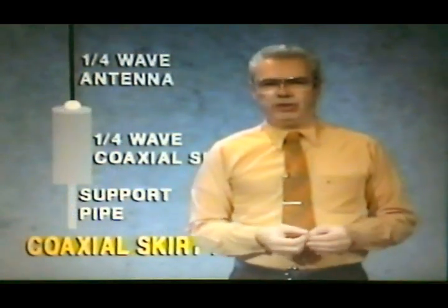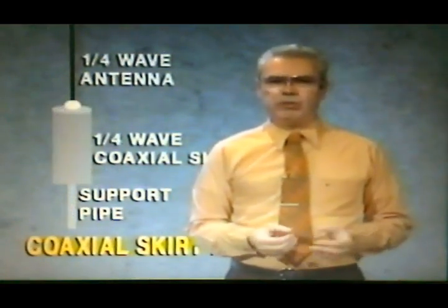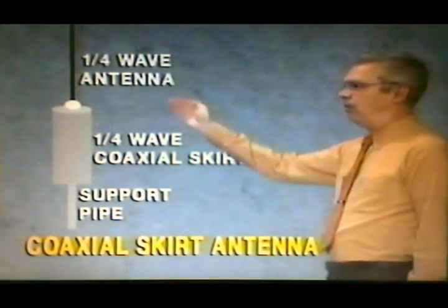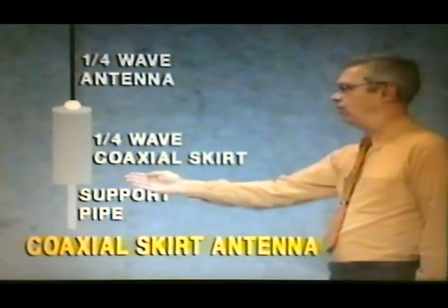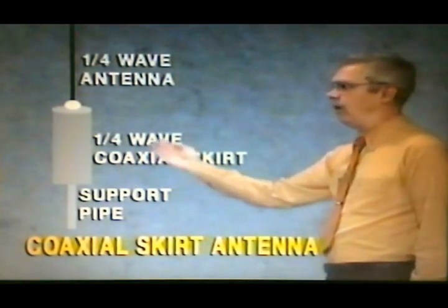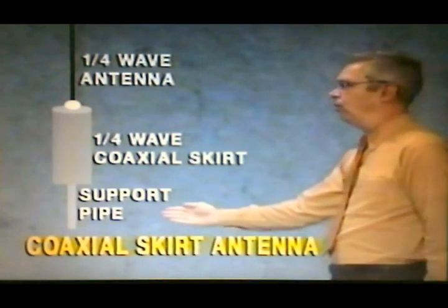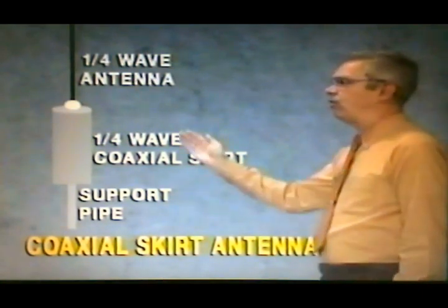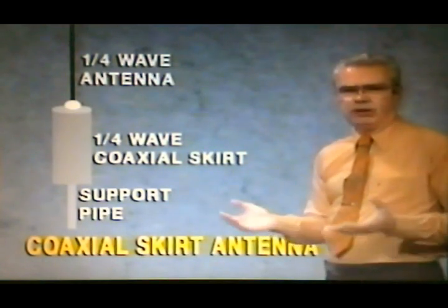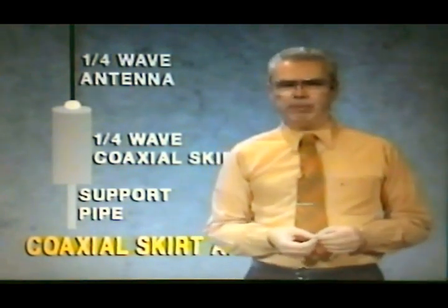Continuing with simple antennas, another one you may see is the coaxial skirt antenna. This has a quarter-wave radiator, but instead of ground plane radials, it has this open-ended tube, or coaxial skirt, that fits over the support pipe. This coaxial skirt serves as a return for the RF current from the antenna, similar to the ground planes. The performance of this antenna is similar to a dipole.